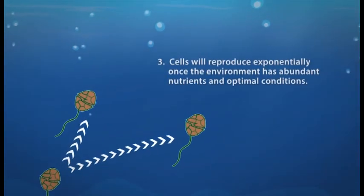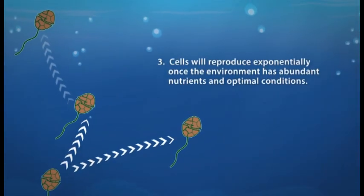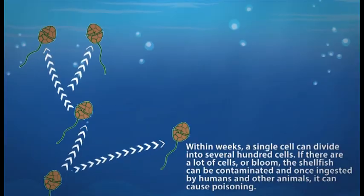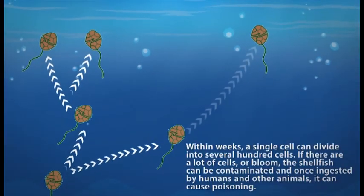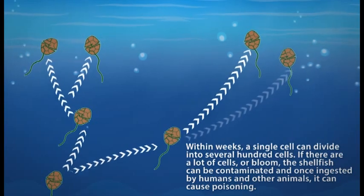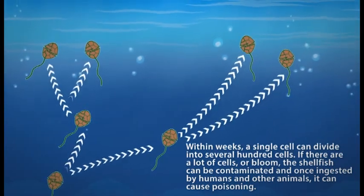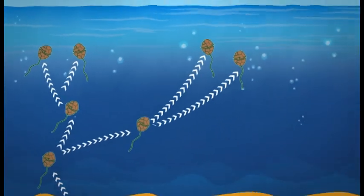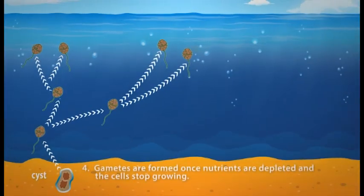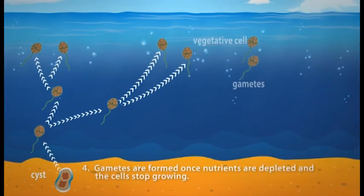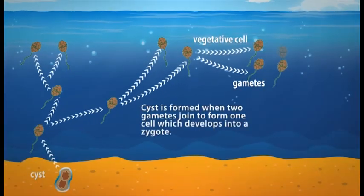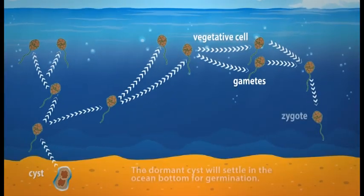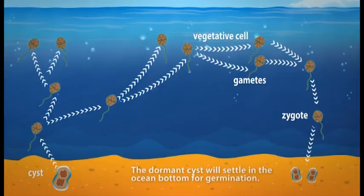Step 3: Cells will reproduce exponentially once the environment has abundant nutrients and optimal conditions. Within weeks, a single cell can divide into several hundred cells. If there are a lot of cells, or a bloom, shellfish can be contaminated, and once ingested by humans and other animals, it can cause poisoning. Step 4: Gametes are formed once nutrients are depleted and the cells stop growing. A cyst is formed when two gametes join to form one cell, which develops into a zygote. The dormant cyst will then settle on the ocean bottom for germination.